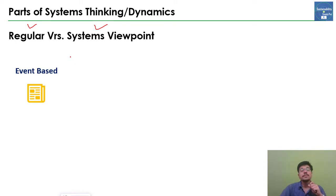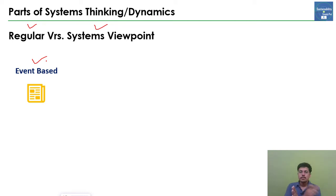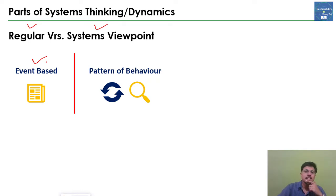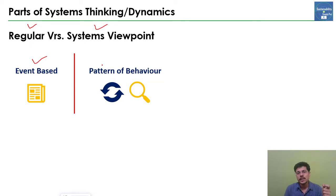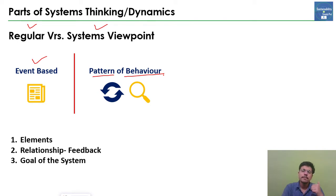The regular viewpoint is event-based — we only think about one specific event and don't go beyond that point, such as its history. That is the difference between the regular viewpoint and the systems viewpoint. In systems dynamics, the definition itself tells us that something is changing with respect to time; it is dynamic in nature, so the pattern of behavior over time is always analyzed. If you haven't seen the first session, I recommend you watch that first for a better understanding.